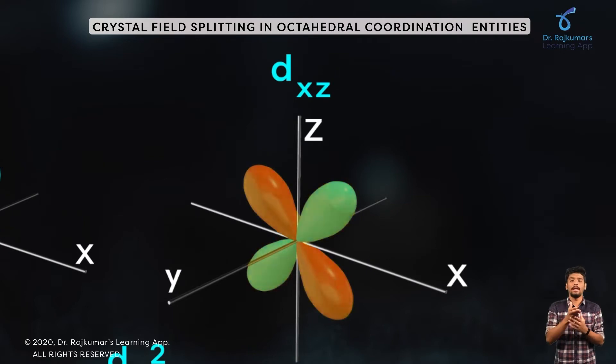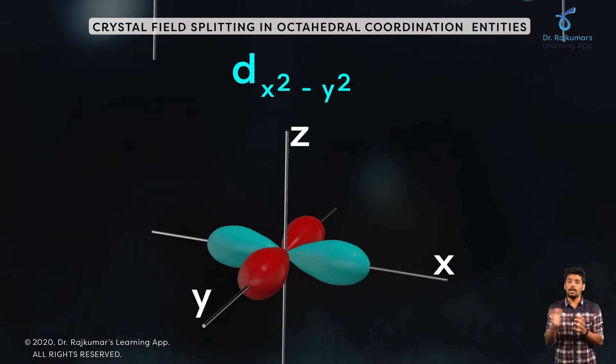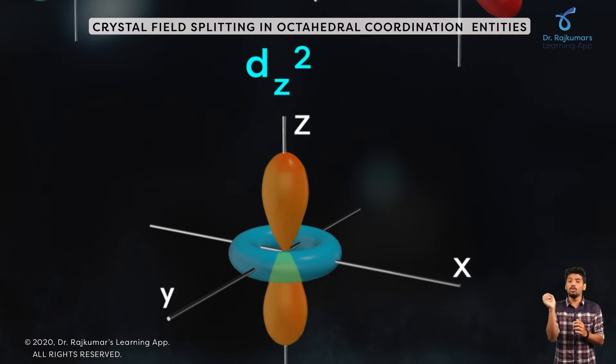When you consider d_x2-y2, the orbital lies on the x and y axis. If we consider d_z2, the orbital lies on the z axis.